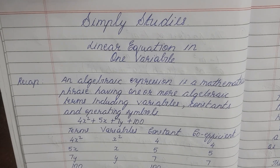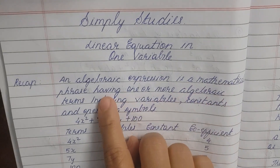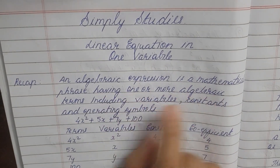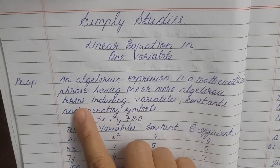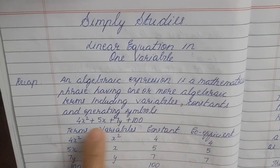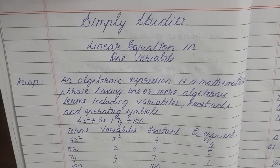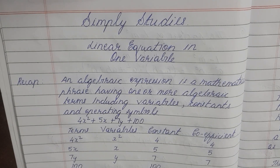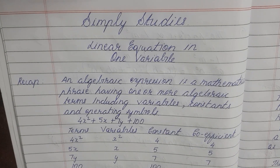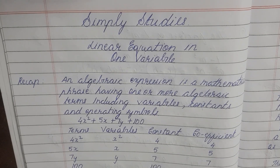Let's do a recap. An algebraic expression is a mathematical phrase having one or more algebraic terms, including variables, constants, and operating symbols. So an algebraic expression is a phrase. In that phrase, what do we have? Algebraic terms. And in those terms, what do we have? Variables, constants, and operating symbols.